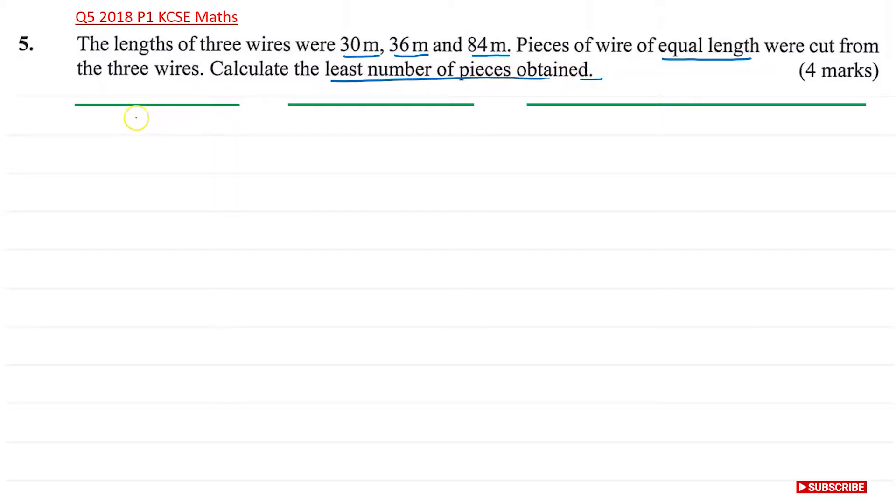So what we have is three pieces of wire: one is 30 meters, another is 36 meters, and the last one is 84 meters in length. What we need is to have pieces of wire cut out from each one of these, but the pieces need to be of the same length. For example, if I have five meter pieces from this one, then I need to have five meter pieces from this one and from this one without wasting anything.